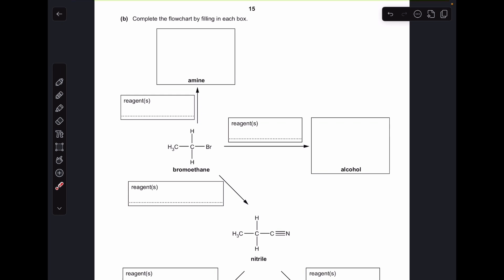Moving on to part B, this big organic flow chart. We'll go this way first, bromoethane up to the amine. To generate an amine from a haloalkane, you need to react it with an excess of ammonia in ethanol, and the amine that forms is that one there.